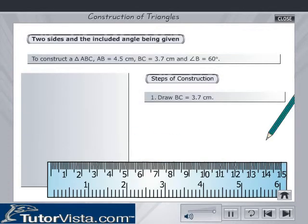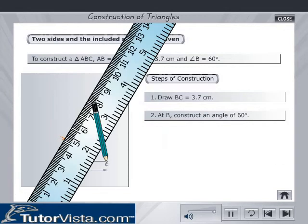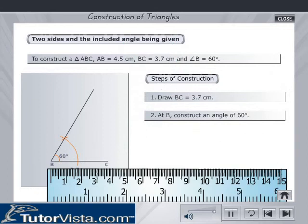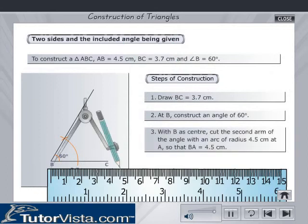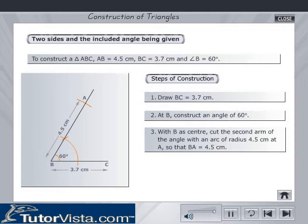Draw BC is equal to 3.7 cm. At B, construct an angle of 60 degrees. With B as center, cut the second arm of the angle with an arc of radius 4.5 cm at A, so that BA is equal to 4.5 cm.